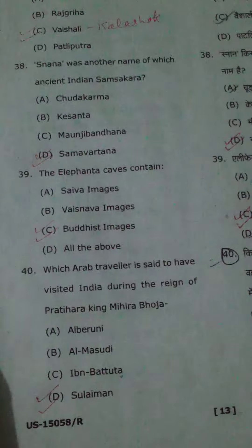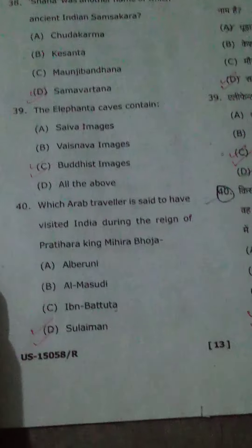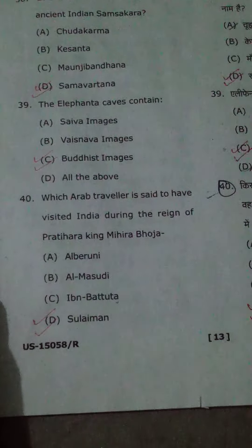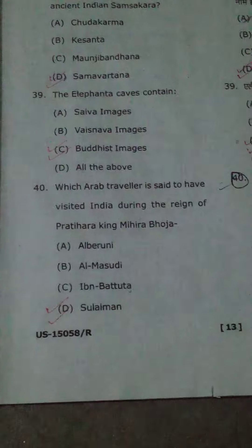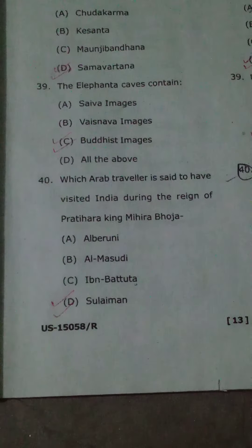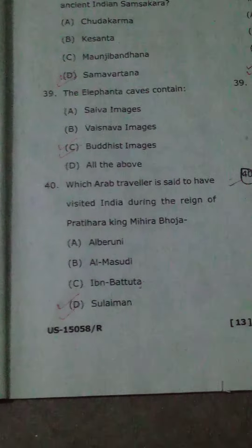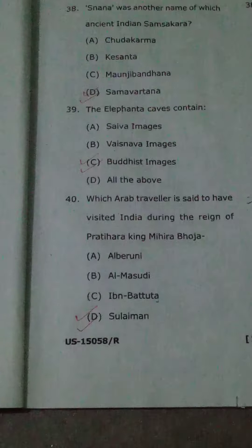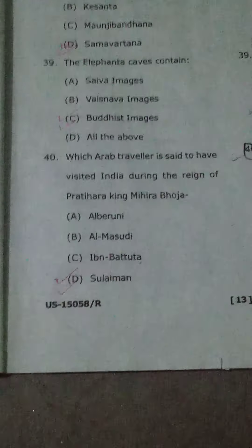The Elephanta caves contain Buddhist images. Which Arab traveler is said to have visited India during the reign of Pratihara king Mihir Bhoj? That was Sulayman.